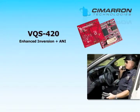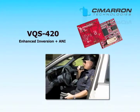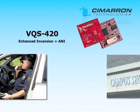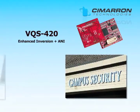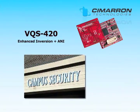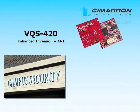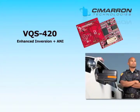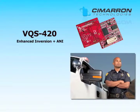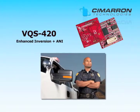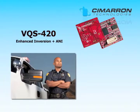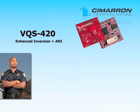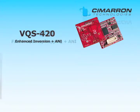The VQS-420 includes the simple inversion capabilities of the VQS-400 but adds HOPPTT. HOPPTT is a form of enhanced inversion encryption. With HOPPTT, the inversion frequency changes with every PTT, so every transmission is using a different inversion point. The VQS-420 also adds MDC-1200 and GE-STAR encode and decode features.